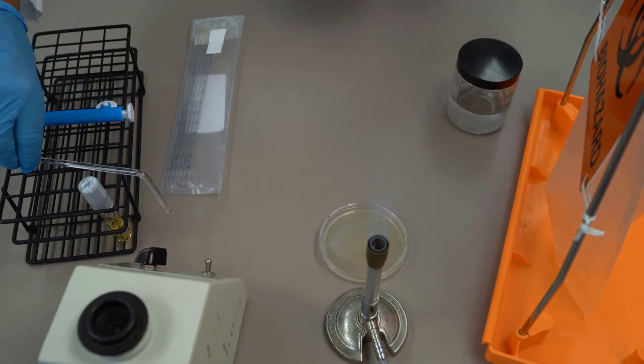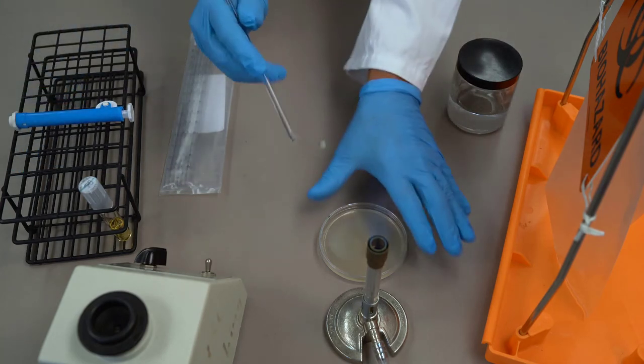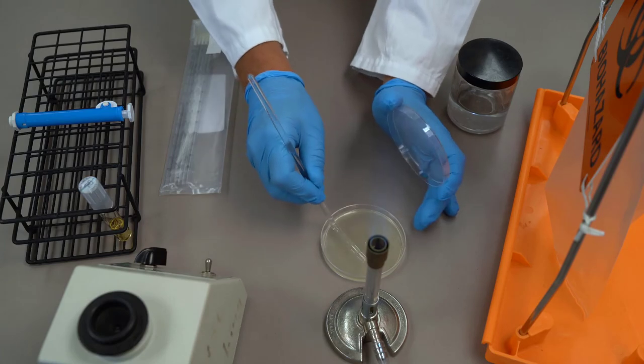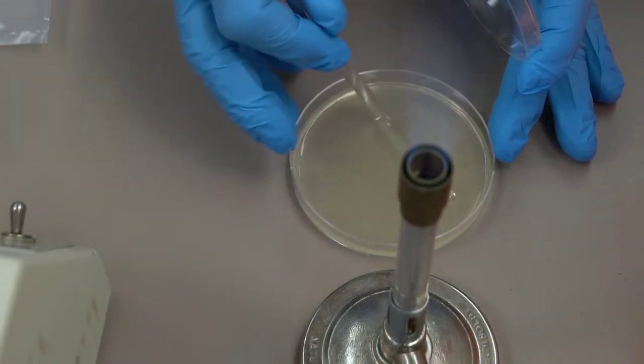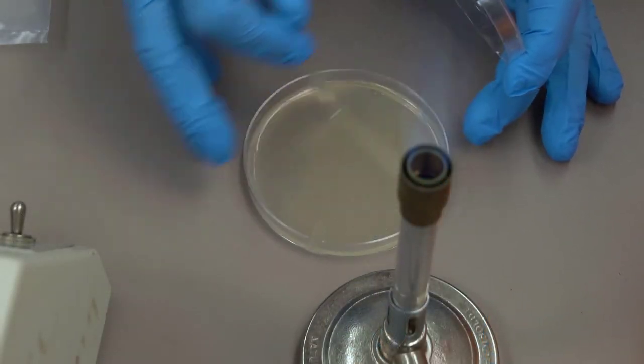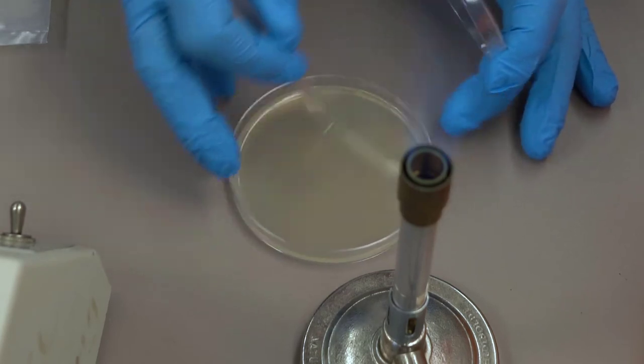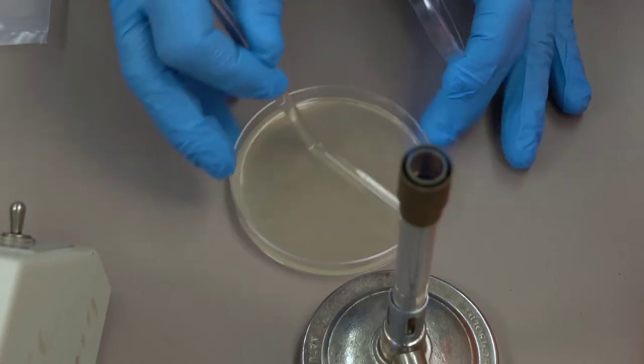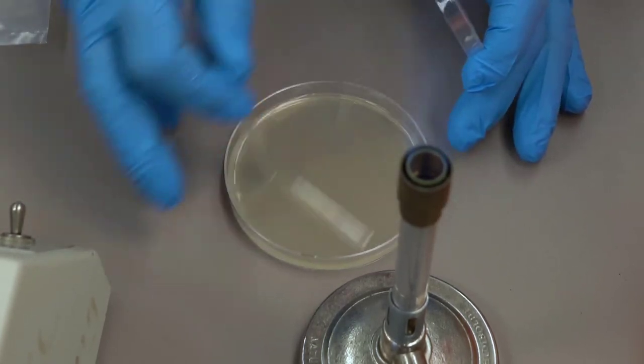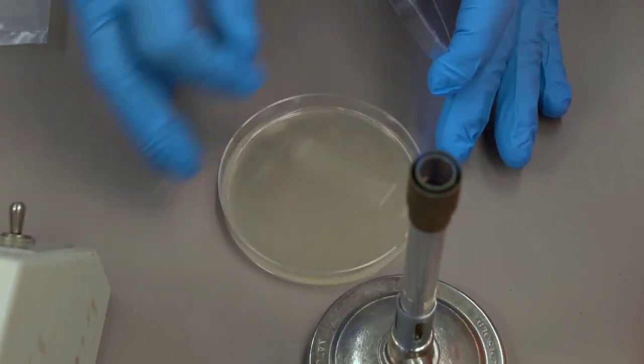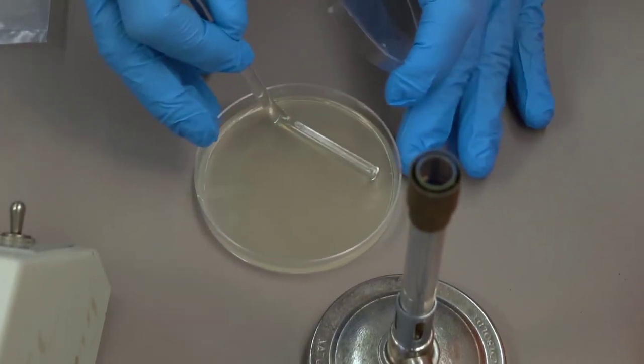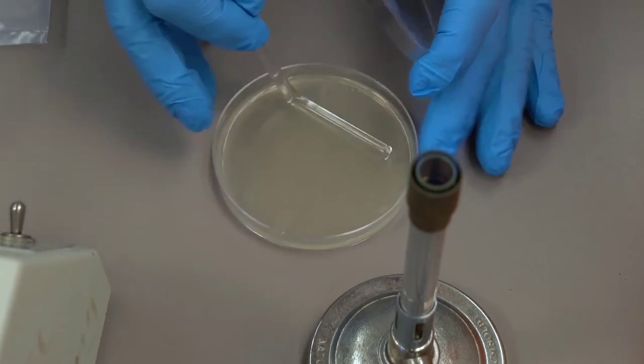We're going to take our glass rod and spread that inoculum across the surface of the plate. You want to work close to the flame whenever your cultures are open to let the convective air currents prevent contaminants from dropping into your cultures. We're rotating this plate to spread that inoculum evenly across the surface.